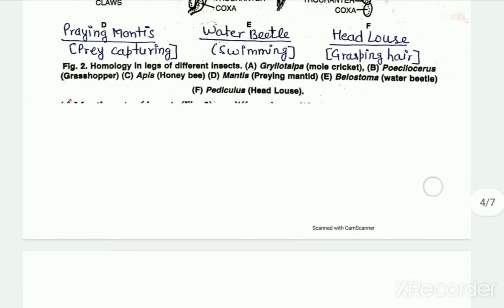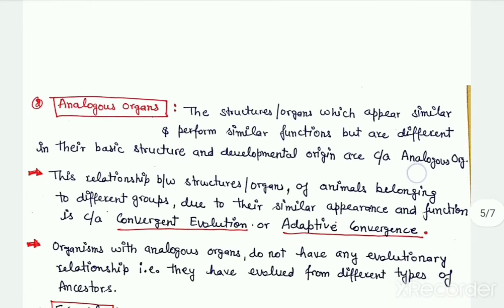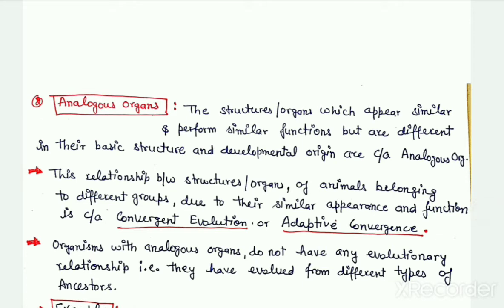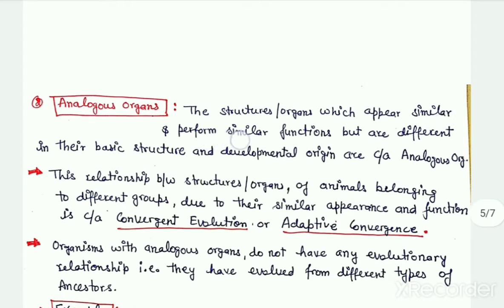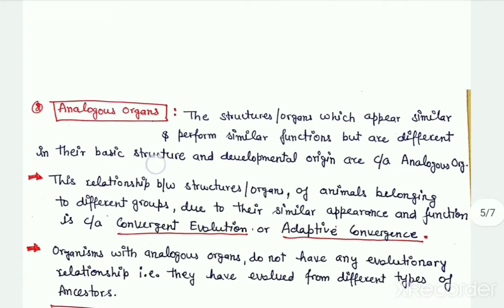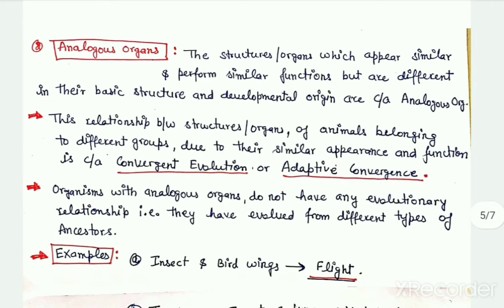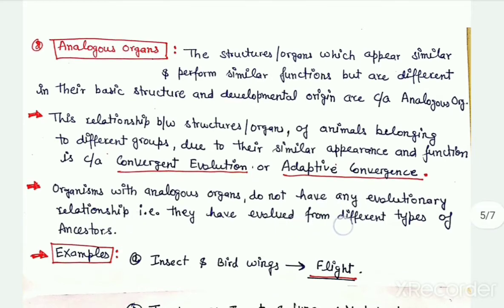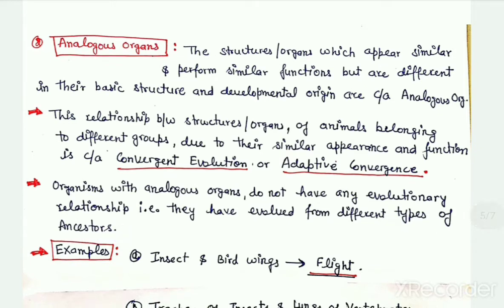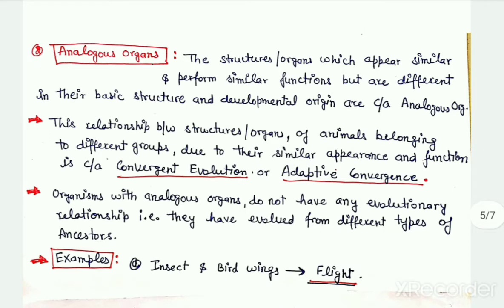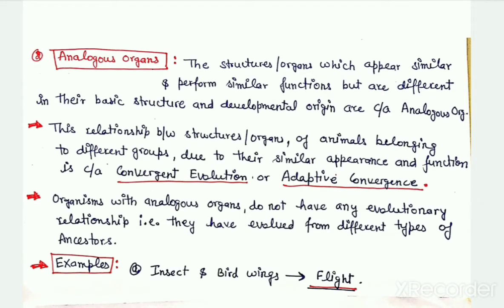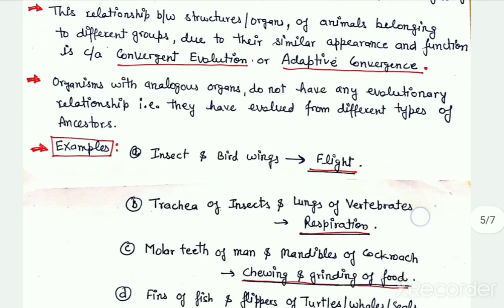The next type of organs are analogous organs, which are exactly opposite of homologous organs. They may appear similar and perform similar functions, but they have different basic structures. Their function will be the same, but their basic structure will be different. Organisms with analogous organs do not have any evolutionary relationship — they have evolved from different ancestors. This relationship is termed convergent evolution or adaptive convergence.